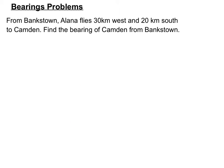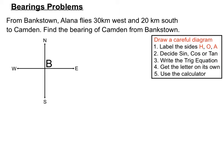Here's our last example. From Bankstown, Alana flies 30km west and 20km south to Camden. We need to find the bearing of Camden from Bankstown. Previously we were given a bearing and had to find distances; here we're given distances and must find an angle. We place B for Bankstown as the start, then mark 30km west and 20km south to C for Camden — these become the two sides of our right angle triangle.